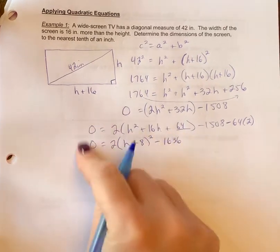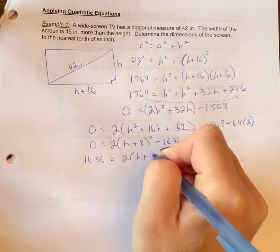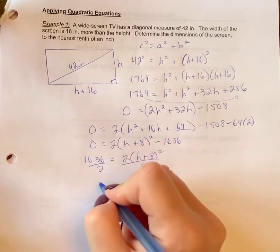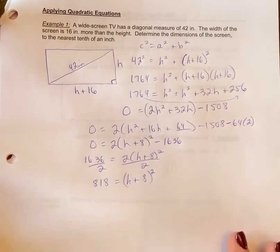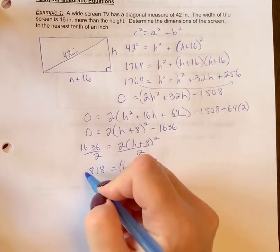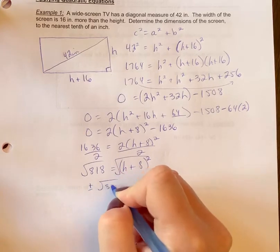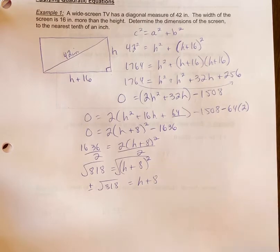Now we're going to solve, so move 1636 to the other side. We're going to divide by 2. Nice even numbers here again, so that's great. And we get this. Now we must square root both sides. So this is plus or minus the square root of 818 equals h plus 8.